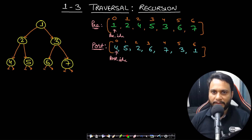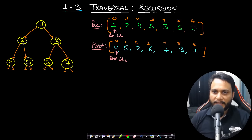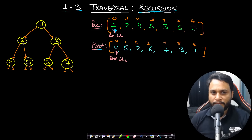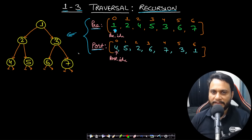I'll call it '1-3 traversal' because the first time we reach a node it is preorder and the third time it is postorder. I'll solve it using recursion. The preorder and postorder are given as input, and we maintain a pre-index and post-index as current position pointers in both arrays. Let me now do a dry run — I've provided the reference tree so it's easier to understand.